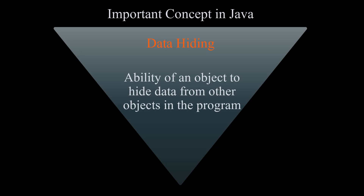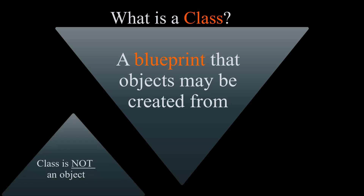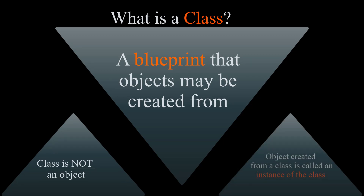So we have been talking about objects, but what is a class and what does an object have to do with a class? In a way, a class is a blueprint that objects may be created from. A class is not an object itself, but it can be a description of an object. An object that is created from a class is called an instance of that class.